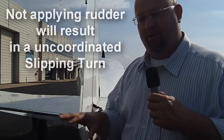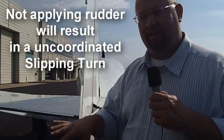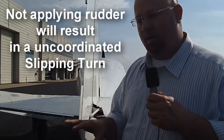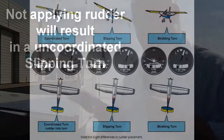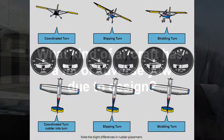Where can adverse yaw get a pilot in trouble? It's typically in the traffic pattern — you're down low and at slow speeds. If you do not use adequate rudder to counteract that adverse yaw, you can set up for a stall-spin scenario.